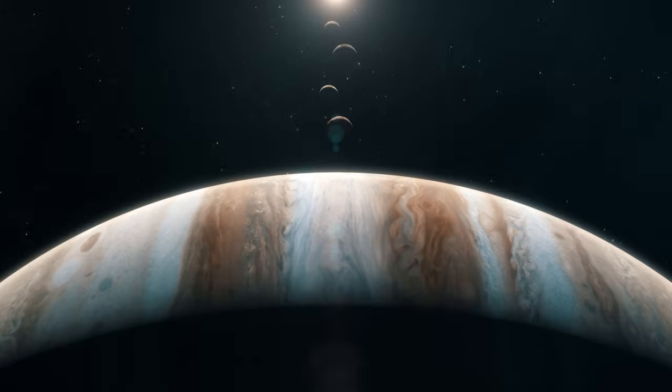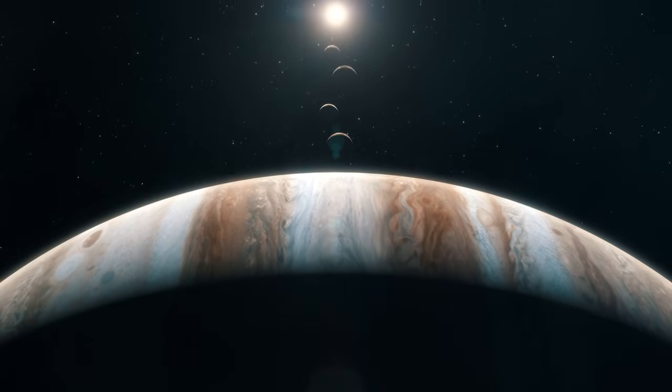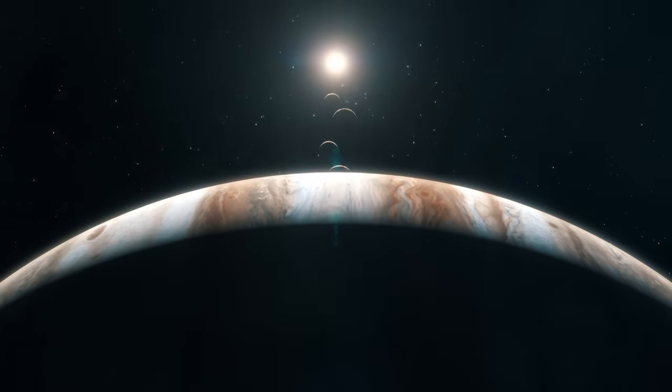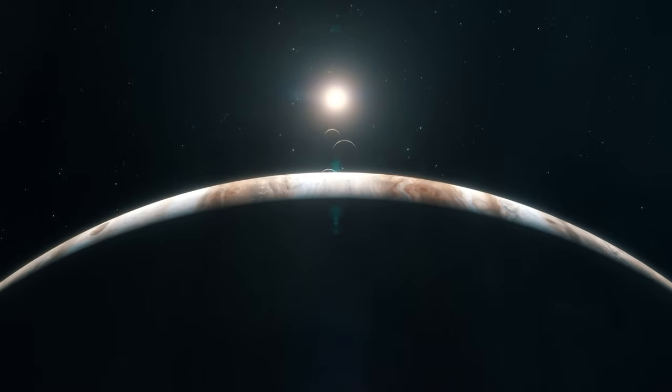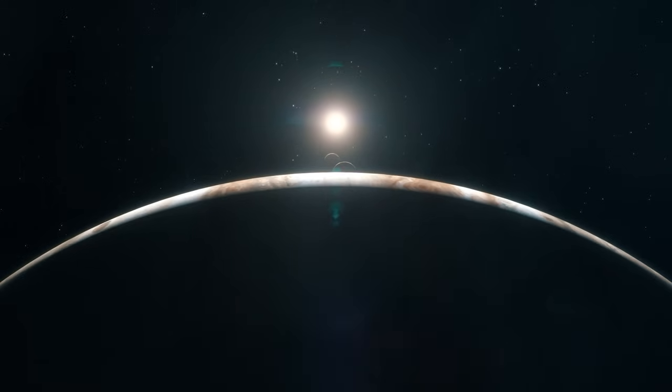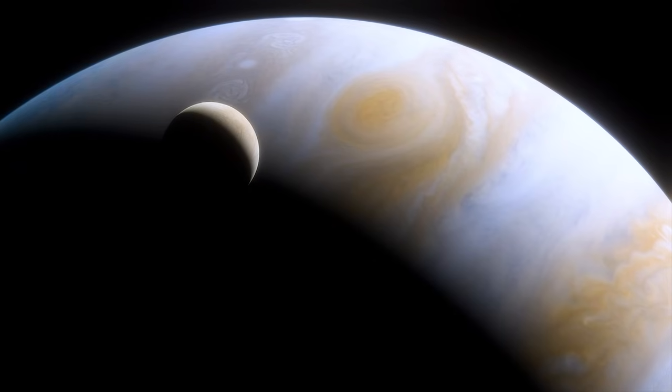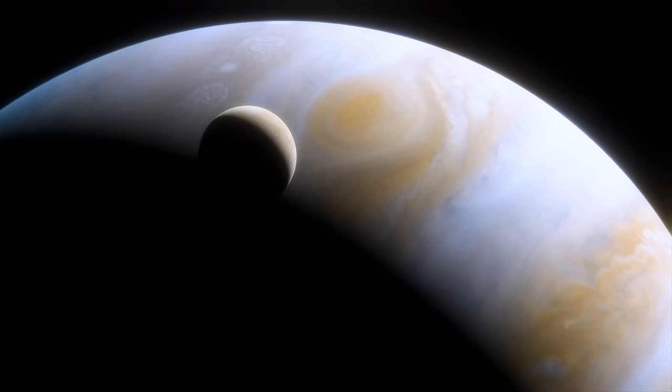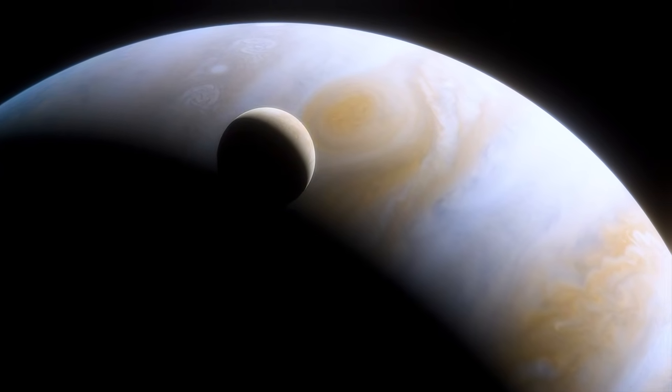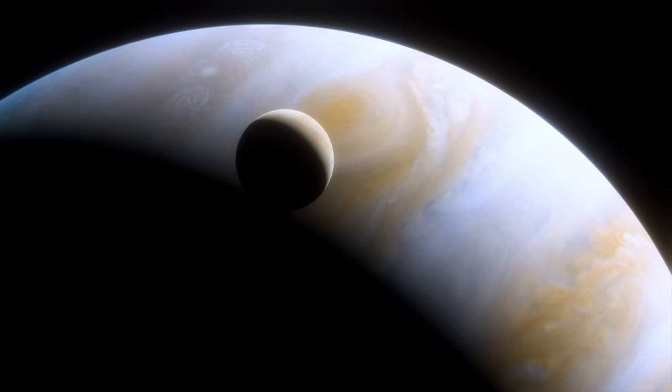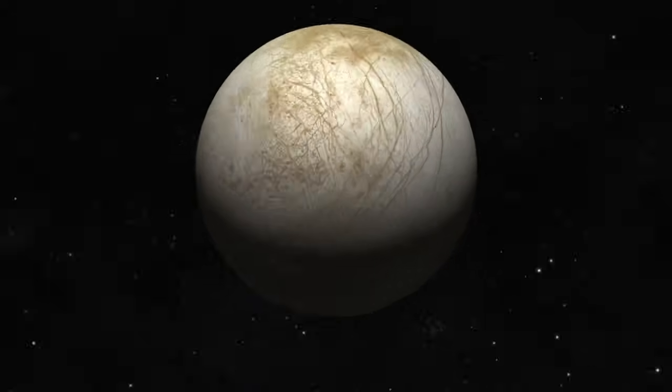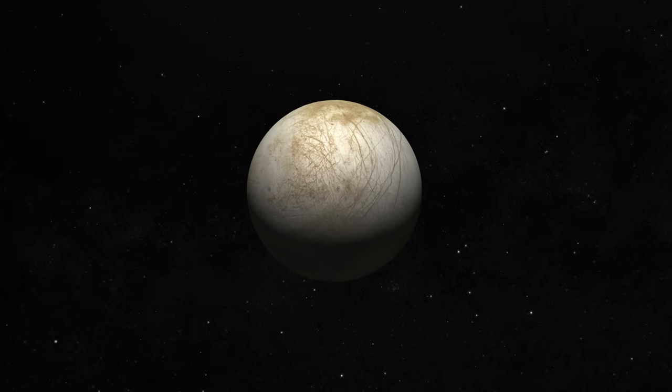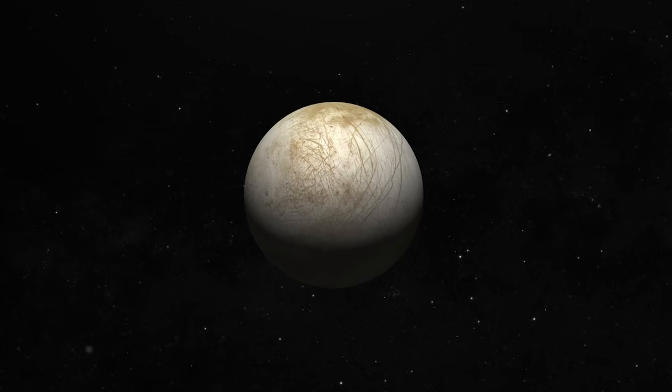Jupiter's tidal forces heat Europa's interior as the planet orbits the moon. Due to geothermal activity from the interior, subsurface oceans should remain liquid. The ocean's solid ice crust is only 15 to 25 kilometers thick. Ocean depths vary between 60 and 150 kilometers. Despite its relatively modest size, Europa may contain twice as much water as all of Earth's oceans combined.